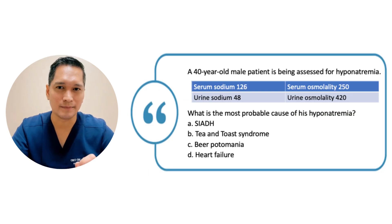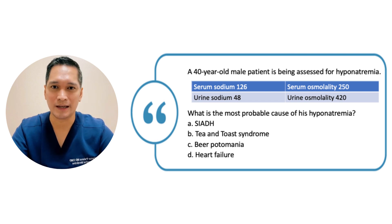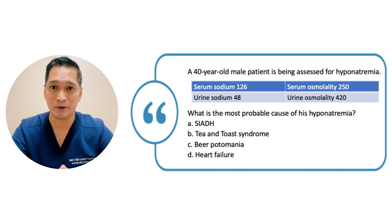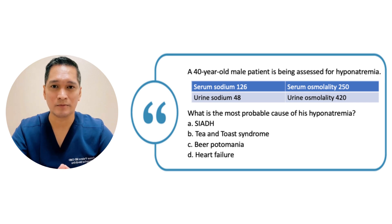A 40-year-old male patient is being assessed for hyponatremia. His serum sodium is 126, BUN 10, serum creatinine 1.0, serum osmolality 250, urine osmolality 420, and urine sodium 48. The most probable cause of his hyponatremia is SIADH. In SIADH, euvolemic hyponatremia is typically associated with low to normal BUN and creatinine levels. The urine osmolality is inappropriately high compared to the plasma osmolality. Since plasma volume remains normal in SIADH, the kidneys do not effectively conserve sodium, resulting in urine sodium excretion of greater than 40.